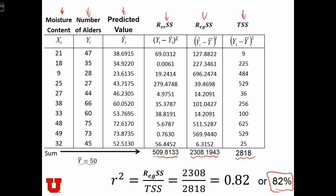So 82% of the variance in the number of alders is controlled, or is explained, by how much moisture there is in the ground.